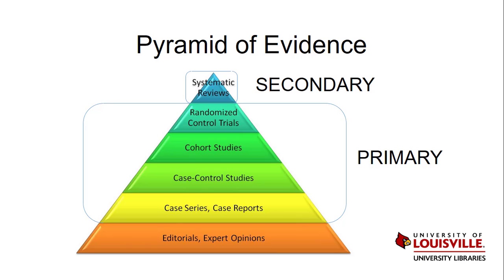Systematic reviews collect and critically analyze multiple studies on a given subject. They are compilations of research from original or primary sources and are therefore not primary sources themselves. The reason systematic reviews sit at the top of the pyramid is because they follow rigorous methods when analyzing and assessing original research.